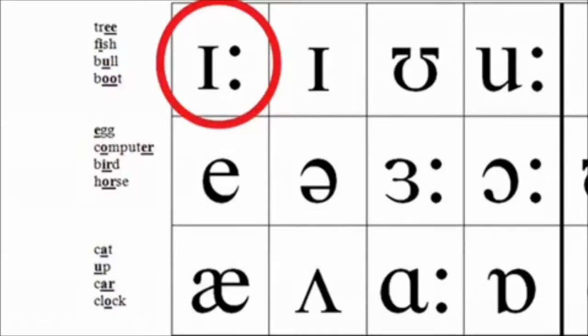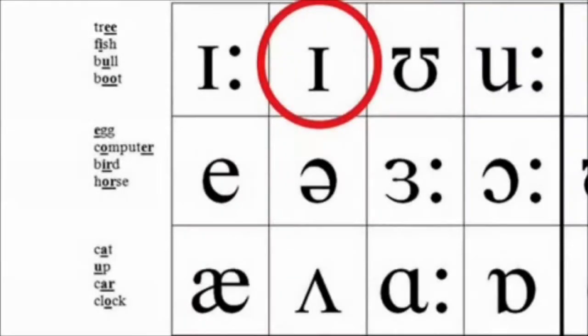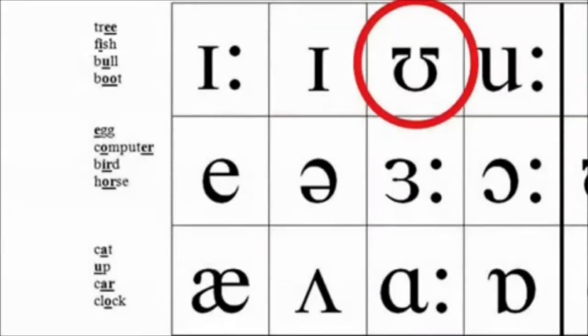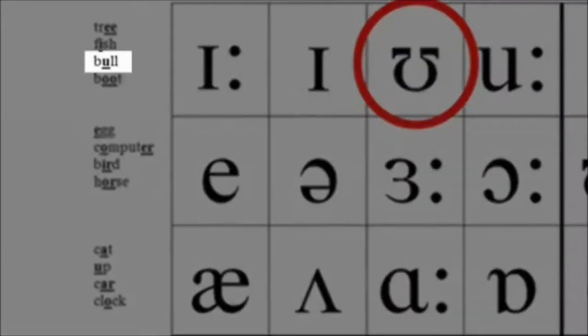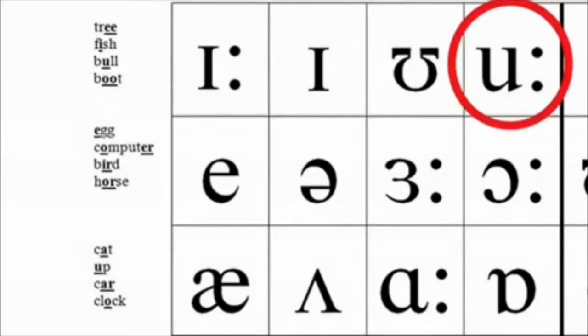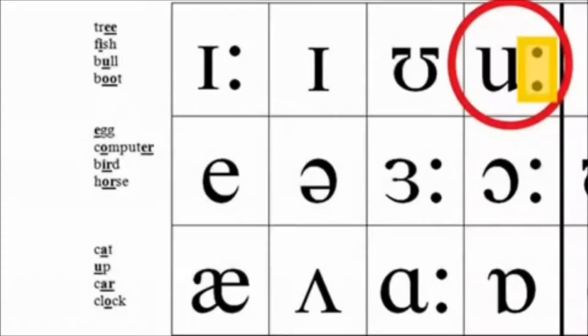Listen and repeat. i: tree. ɪ fish. ʊ bull. u: boot. Notice that some symbols have colons after them. This means they're long vowels like u:, e:, a:.